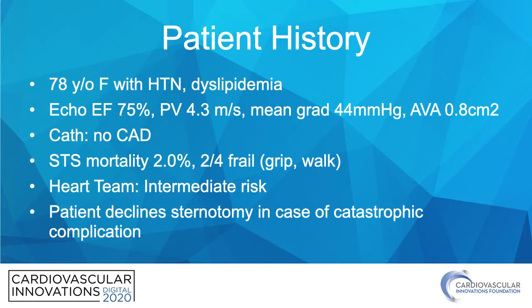Getting directly into this case: this is a 78-year-old woman with hypertension and dyslipidemia. Her echo shows an EF of 75% with a peak velocity of 4.3 meters per second and a mean gradient of 44 mmHg — clear indications for aortic valve replacement. Her cath showed no coronary artery disease. STS mortality was calculated at 2.0%, but she had 2 out of 4 frailty with grip and walk, and our heart team determined her to be intermediate risk.